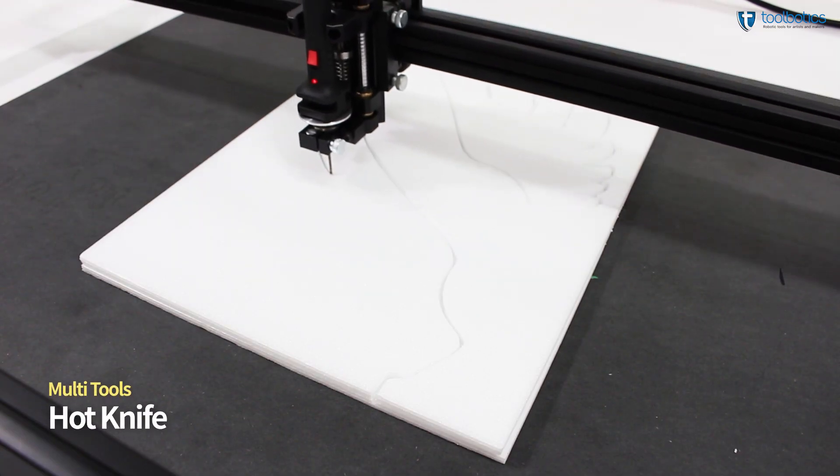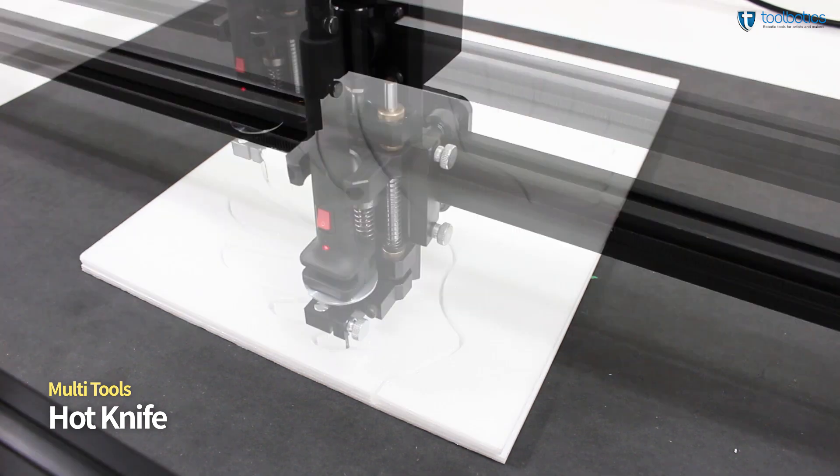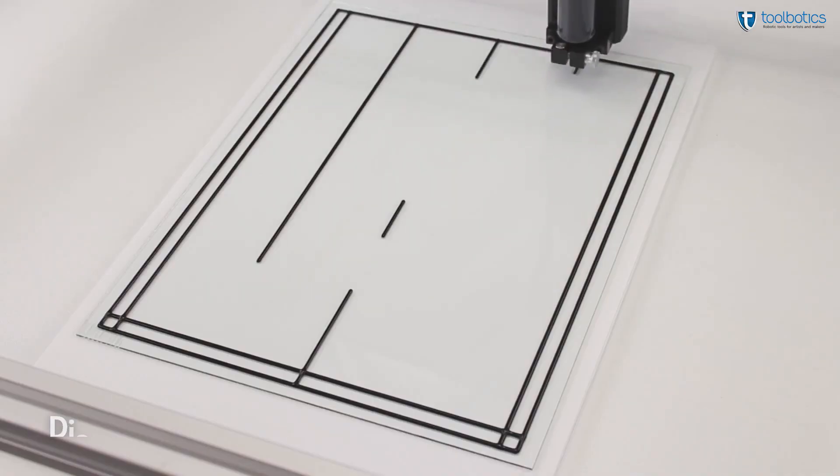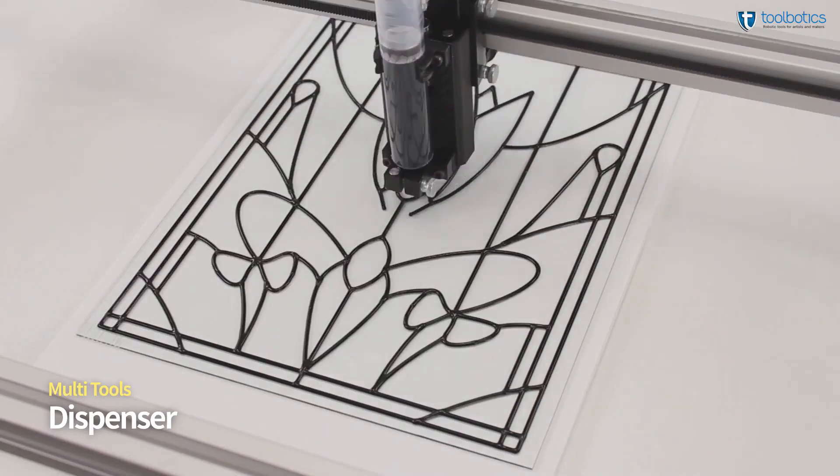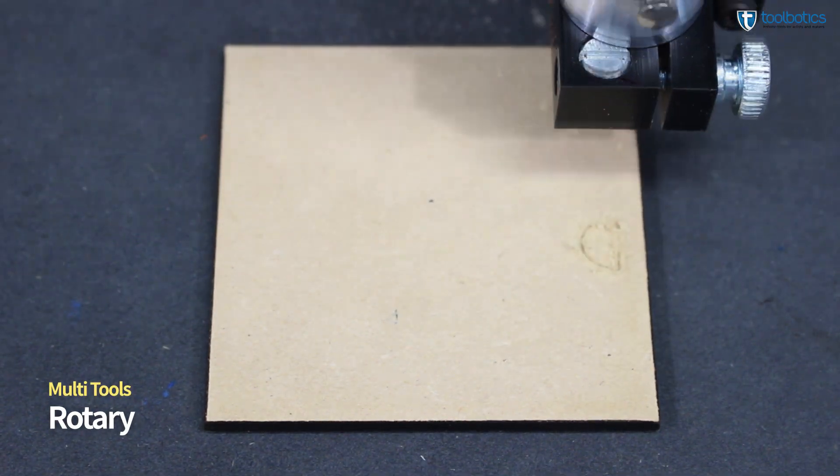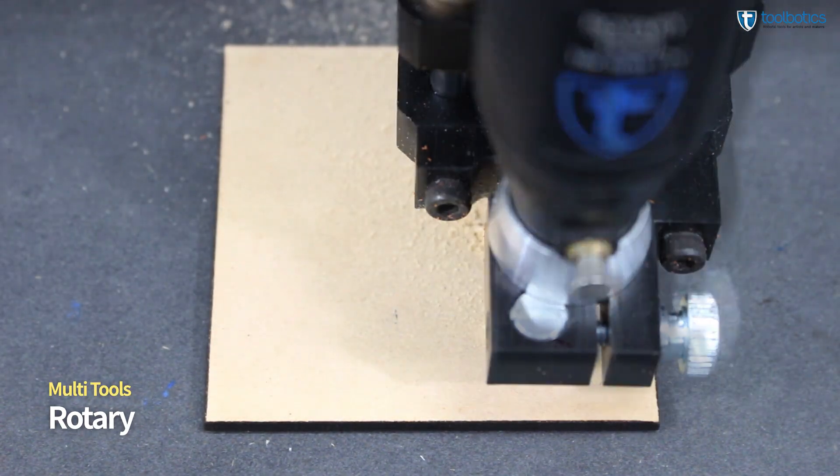Hot knife tool for cutting pads by passing a very hot thin metal rod through material. Dispenser tool for dispensing soft mediums like chocolate and glue. Rotary tool for engraving patterns in soft materials like wood.